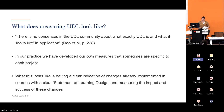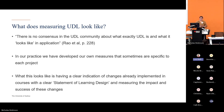What this looks like is having a clear indication of changes already implemented in courses, with a clear statement of learning design and measuring the impact and success of these changes. We go in and work with units, we talk to the academics, we walk them through what we call the designing for diversity process: questioning who are your learners, what is your context, what are the barriers they're facing, what solutions can we implement, and how can we iterate and evaluate?